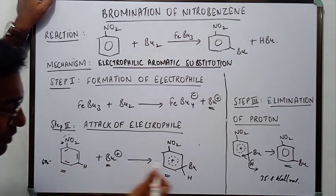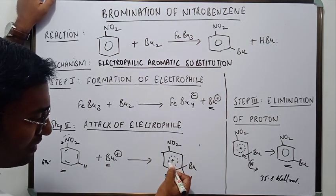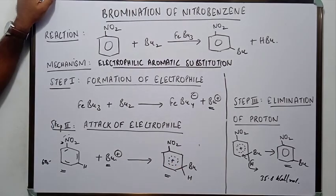When Br takes this electron pair the whole of the carbon becomes positively charged. This is a very unstable condition. The state of Wheland intermediate is an unstable state. And to negate that state, to get rid of that state and become stable again.